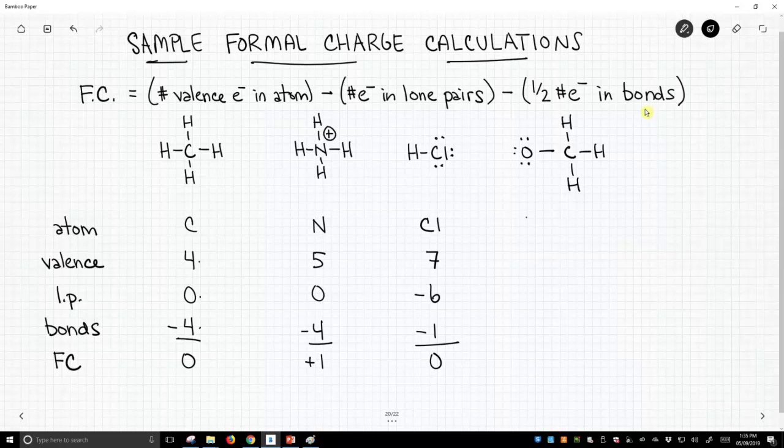Now we have two atoms in our last molecule. We have an oxygen and a carbon. For our oxygen, it should have six valence electrons. It has three lone pairs. That's six electrons. It has one bond that's two electrons times a half is one. And so six take away six take away one is a negative one. This oxygen has a negative charge, so we'll put a minus, and we will circle that minus to make it clear.